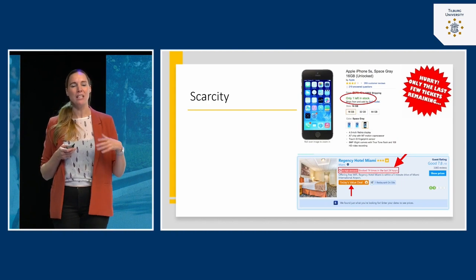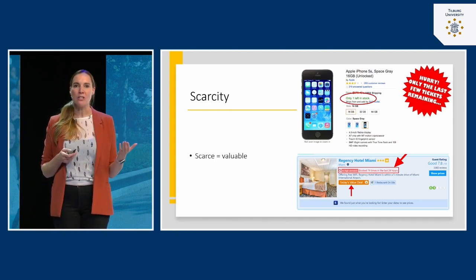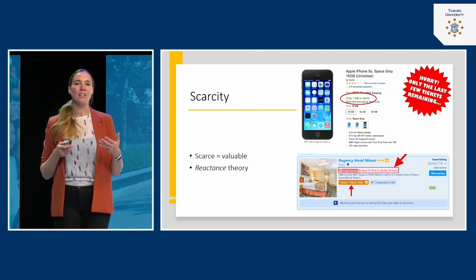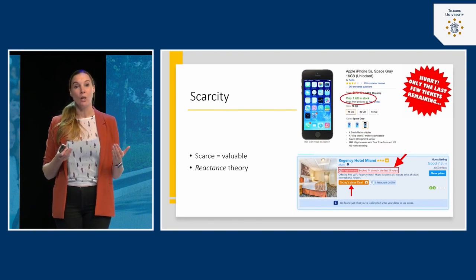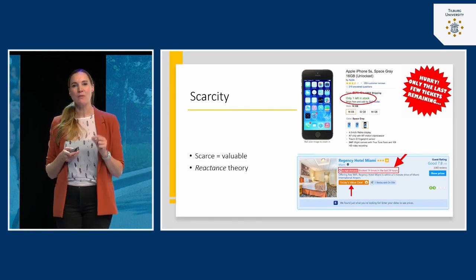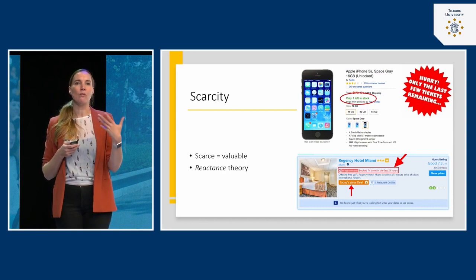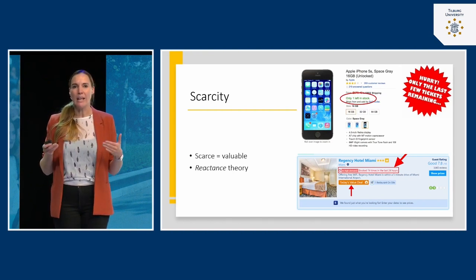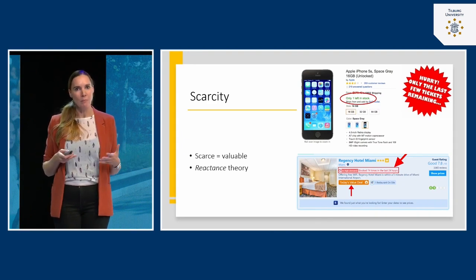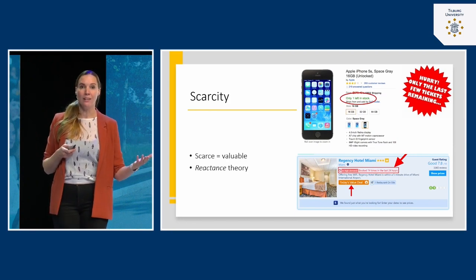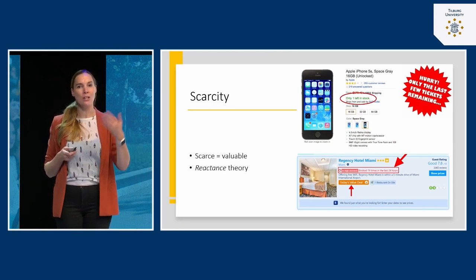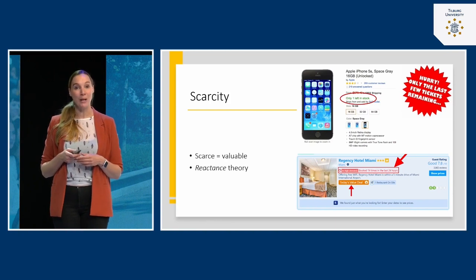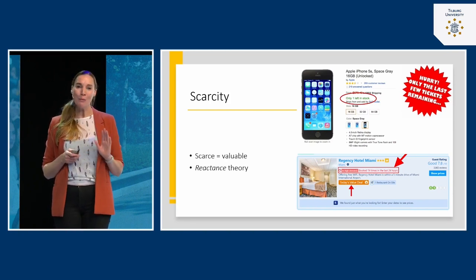The idea is: if something is scarce, it's probably valuable — and you may not be able to purchase it if you wait. This taps into our feelings of psychological reactance. The moment we feel we may not have the option to buy something if we wait, we feel resistance — we like to be free in our decisions. If a choice option seems about to disappear, we tend to buy very quickly, which is exactly what marketeers want. Don't be fooled by these scarcity mechanisms.